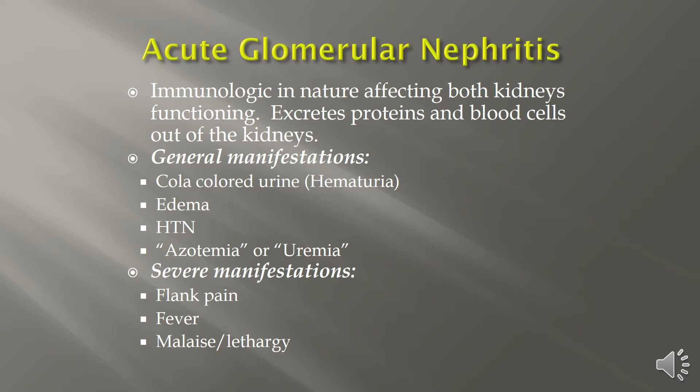Acute glomerular nephritis is immunologic in nature and it affects both kidney functioning. It will excrete proteins and blood cells out of the kidneys. Typically, your patient presents with cola-colored urine, hematuria, edema, hypertension, and either azotemia or uremia. Azotemia is high nitrogen in the blood; uremia is a raised level of urea and other nitrogenous waste compounds normally eliminated by the kidneys.